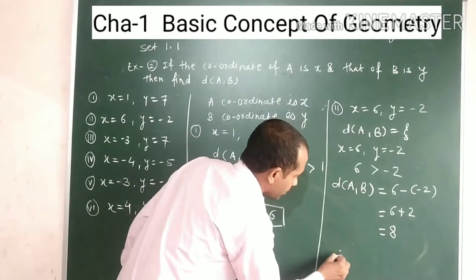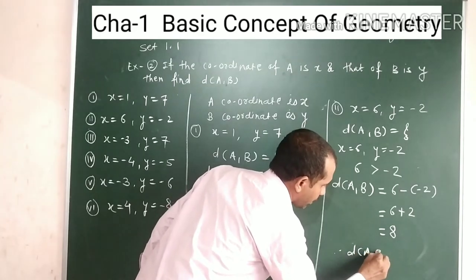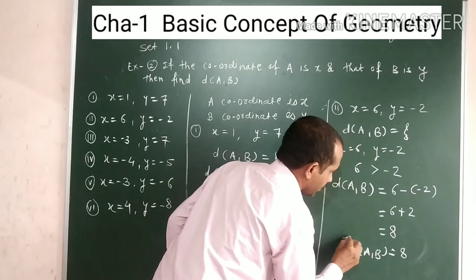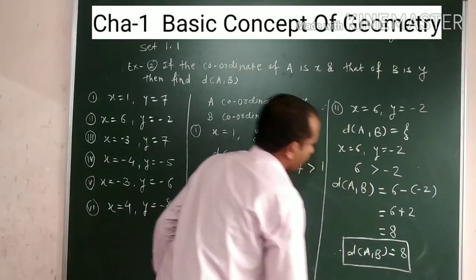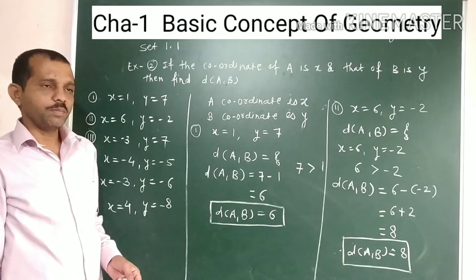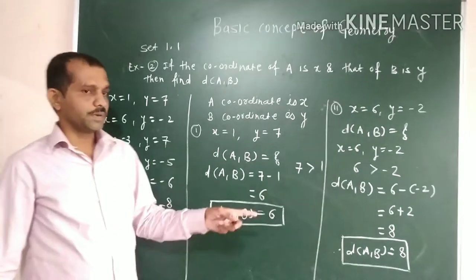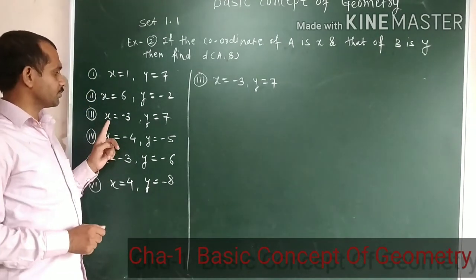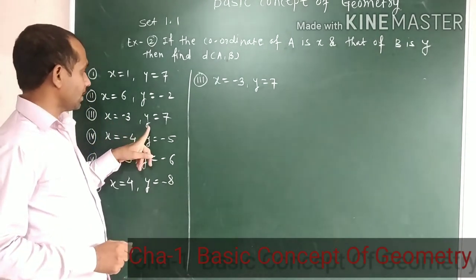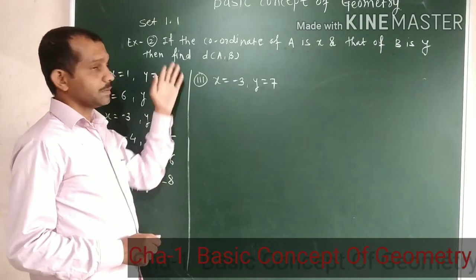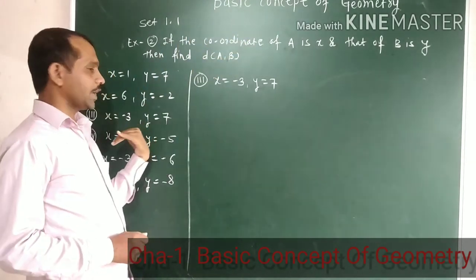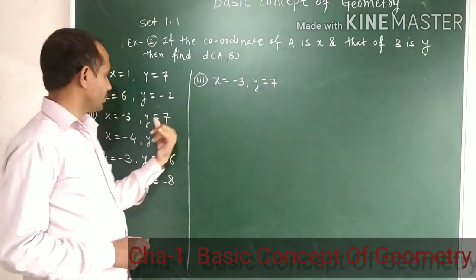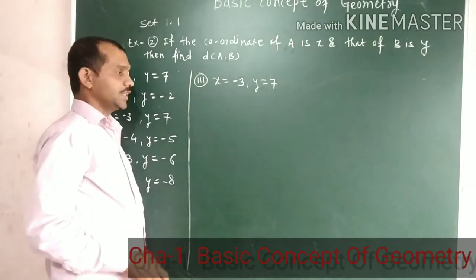Therefore, the distance between points A and B is equal to 8 in the second example. Now start example number 3: x is equal to minus 2 and y is equal to 7.